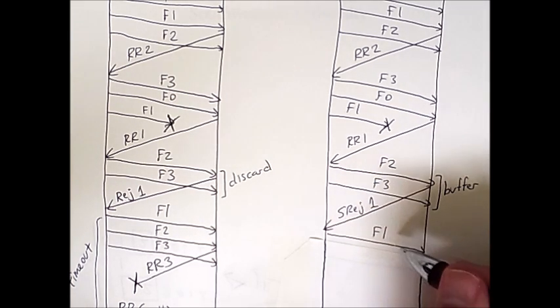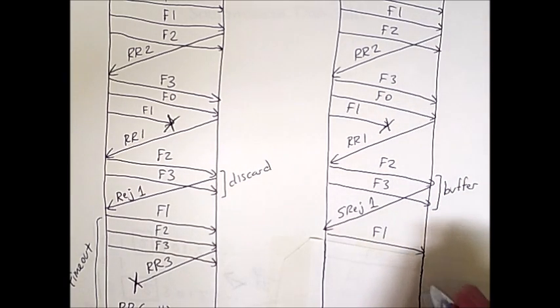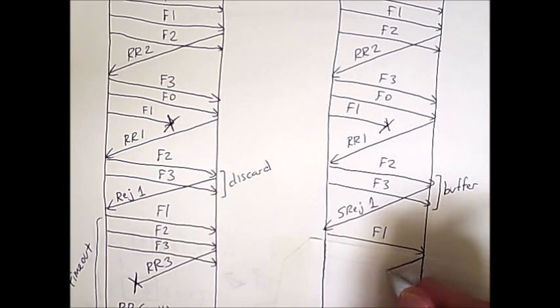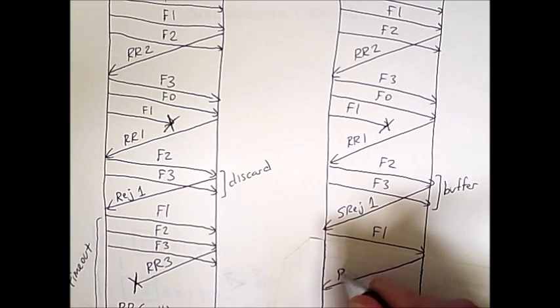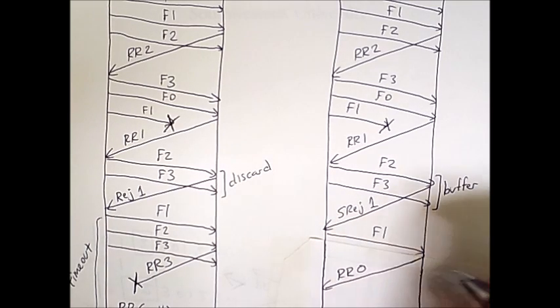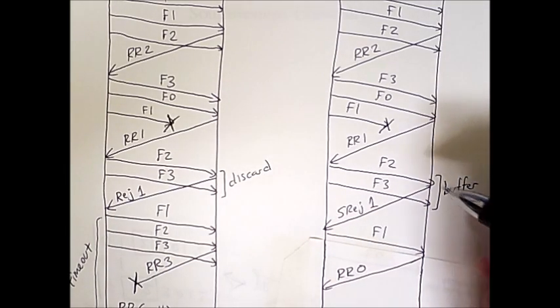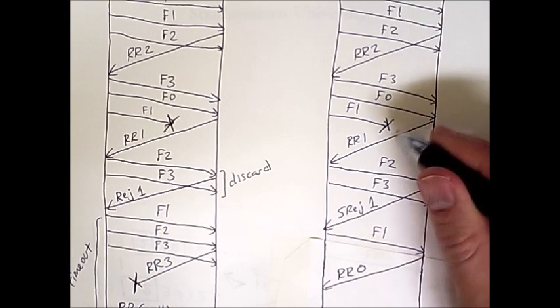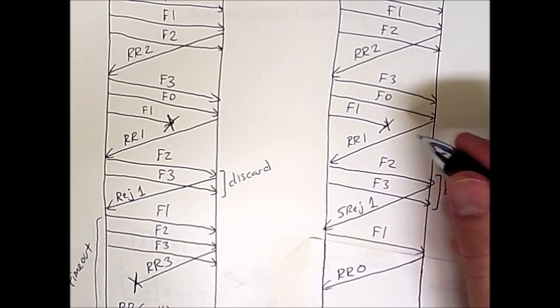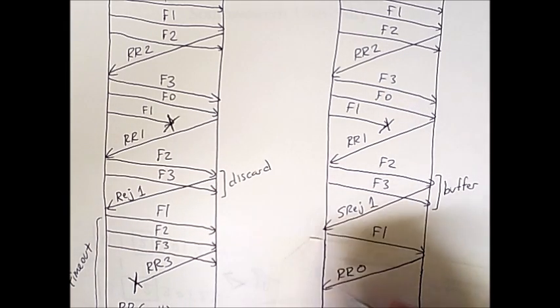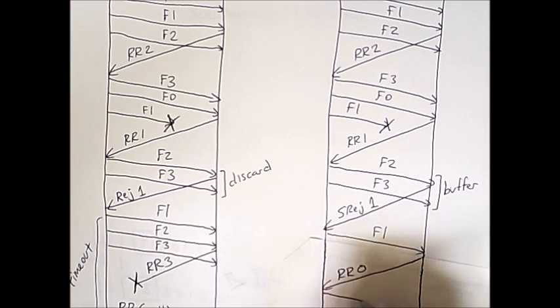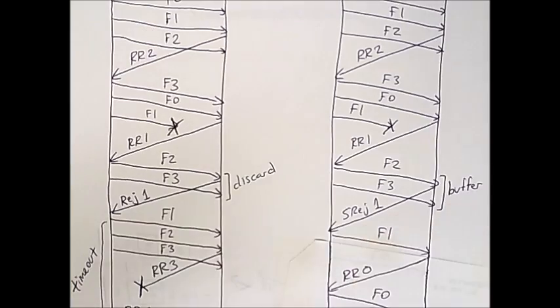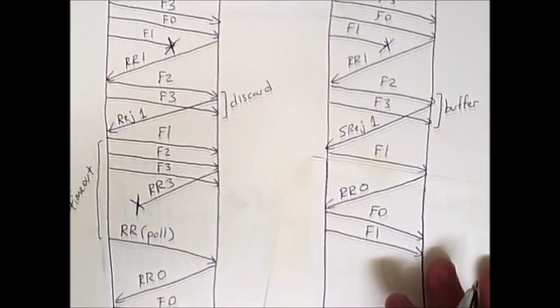So once the frame 1 is received, the destination will send a ready-to-receive 0 because it already successfully received the 2 and the 3. The 1 fills in the gap from what was lost here, and so from this point, we can go back and send frame 0. Now the source will continue sending frames.